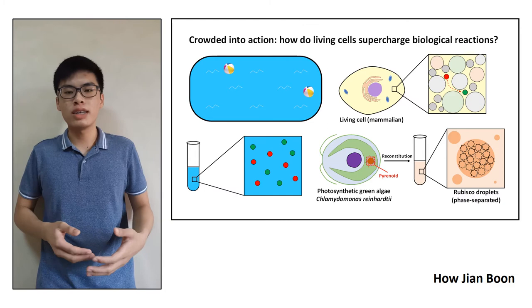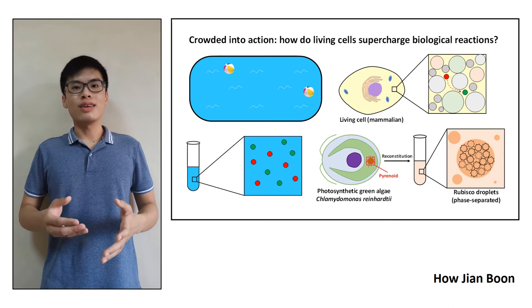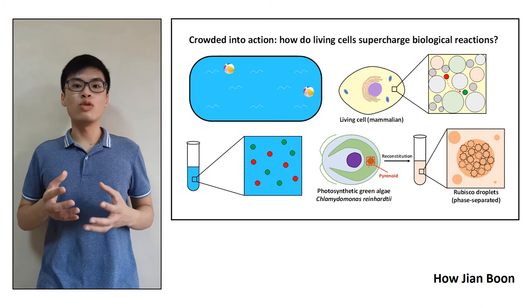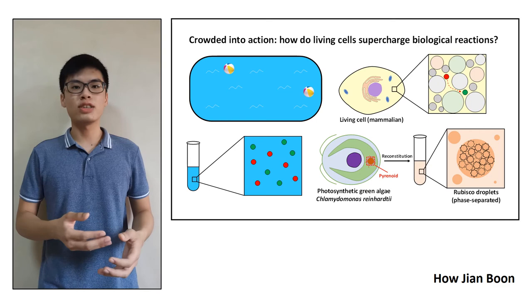The exciting part is that these green algae rubisco droplets can be produced in the lab. However, it is still missing the green algae rubisco activase, an enzyme that enables rubisco to function to its maximum capability. This is where I come in. After a challenging year of trial and error, I was able to produce the green algae rubisco activase, which eluded scientists for 30 years. I was also able to demonstrate that this enzyme is functional.